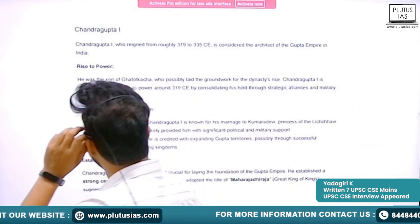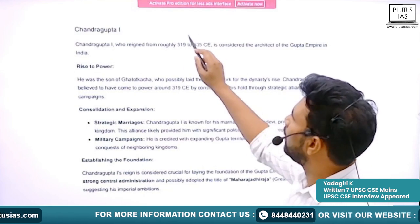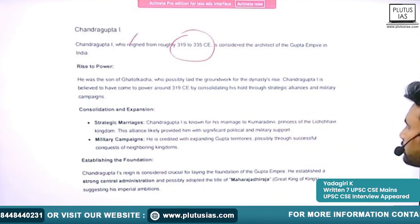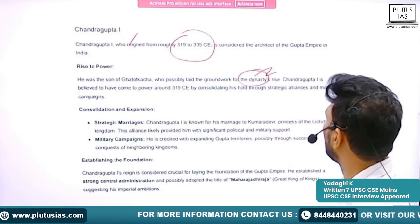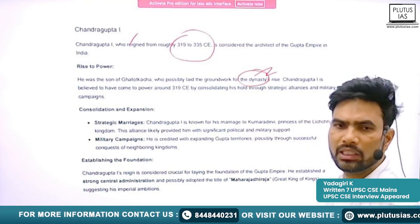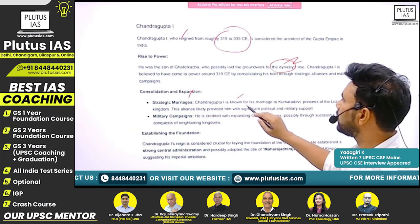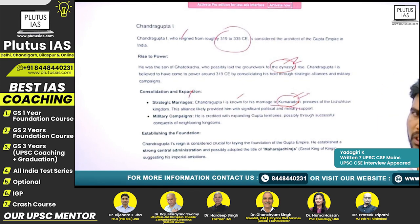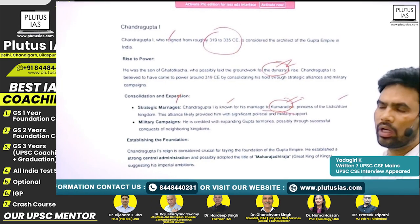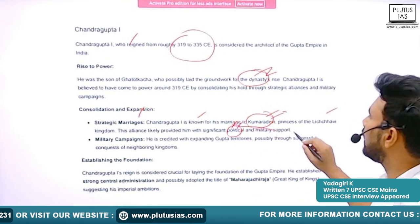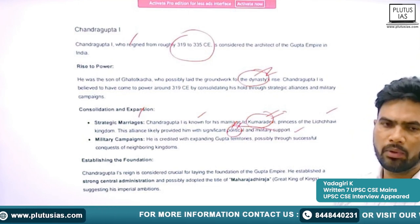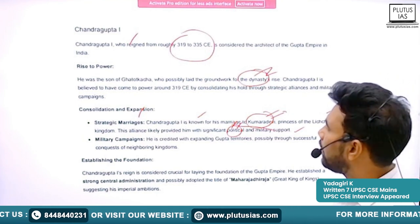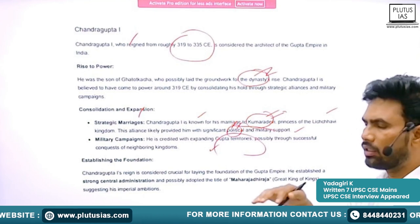Chandragupta I ruled from 319 to 335 AD. He is the first among the great Gupta kings. He laid the groundwork for the rise of the empire. He is known for his strategic marriage with the Lichhavi princess Kumaradevi, which gave him significant political and military support through the matrimonial alliance with the Lichhavi kingdom.